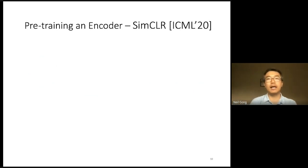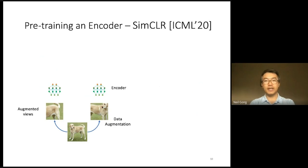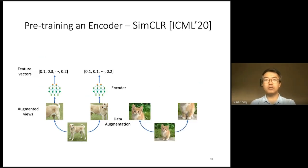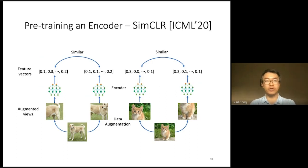Let's use SimCLR as an example to illustrate encoder pre-training. Suppose we are given an image. We first use data augmentation to create two random augmented views. We have an encoder and use it to produce a feature vector for each augmented view. Suppose we give another image — we also create two random augmented views and use the encoder to produce a feature vector for each of them. An encoder is basically pre-trained such that it produces similar feature vectors for two random augmented views of the same image, but dissimilar feature vectors for two random augmented views of different images.